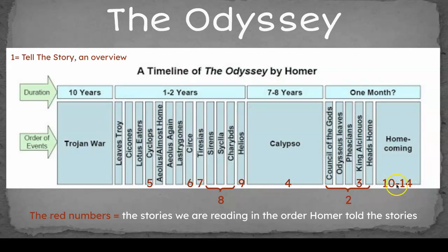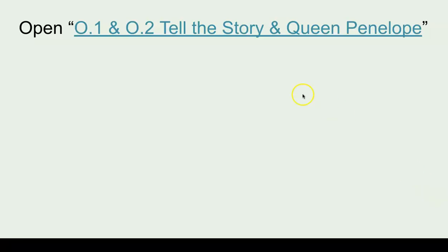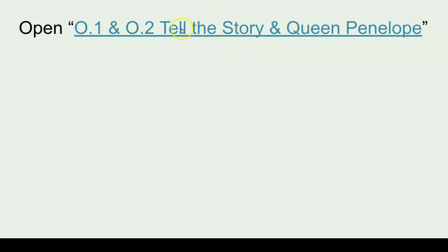The red numbers indicate the stories we're reading in the order that Homer told them. When you open the assignment — Tell the Story and Queen Penelope — you'll see two different stories. I'm going to go over some photos now that will help you understand what's happening when you read Tell the Story.